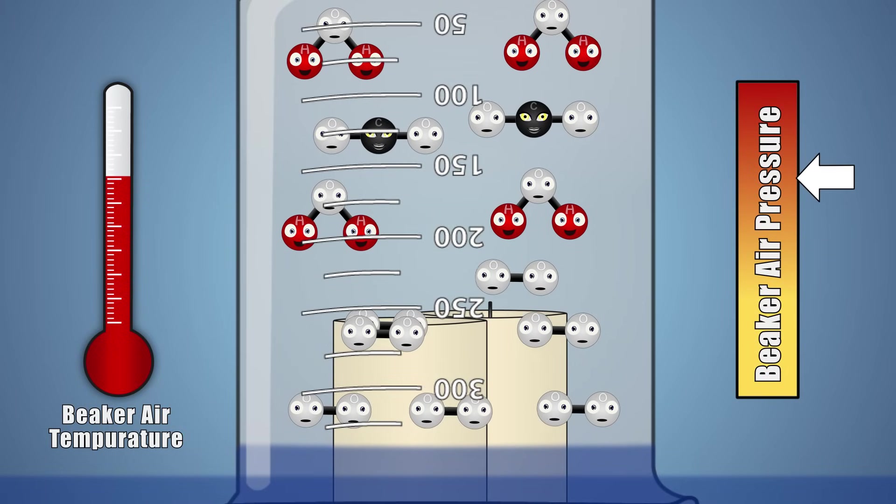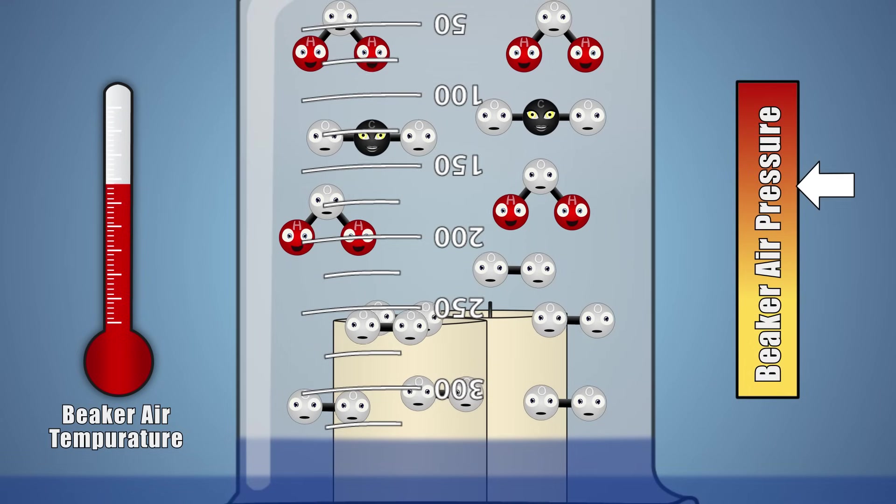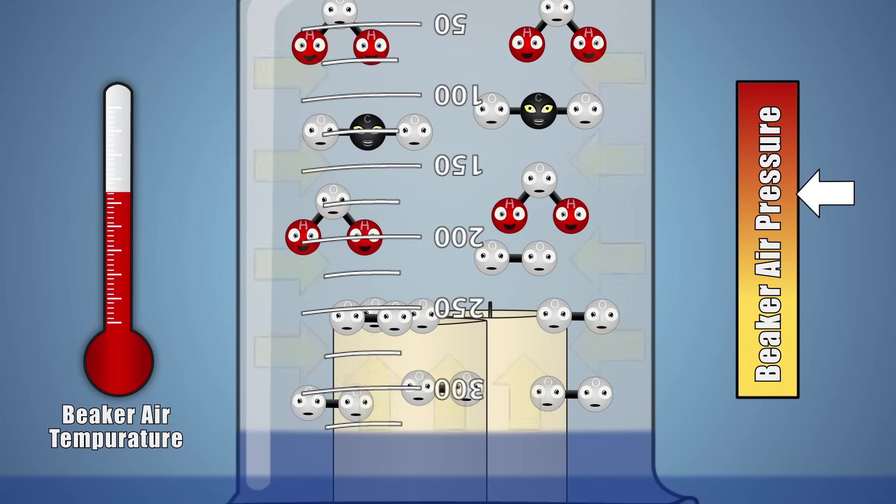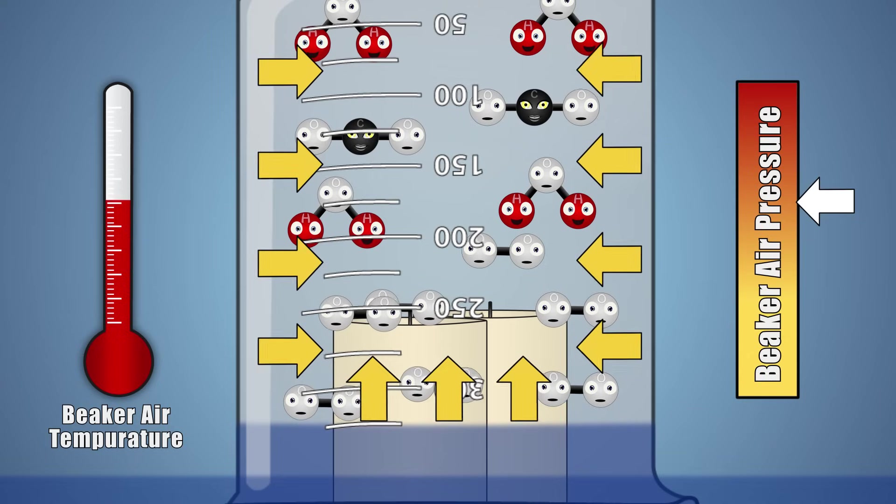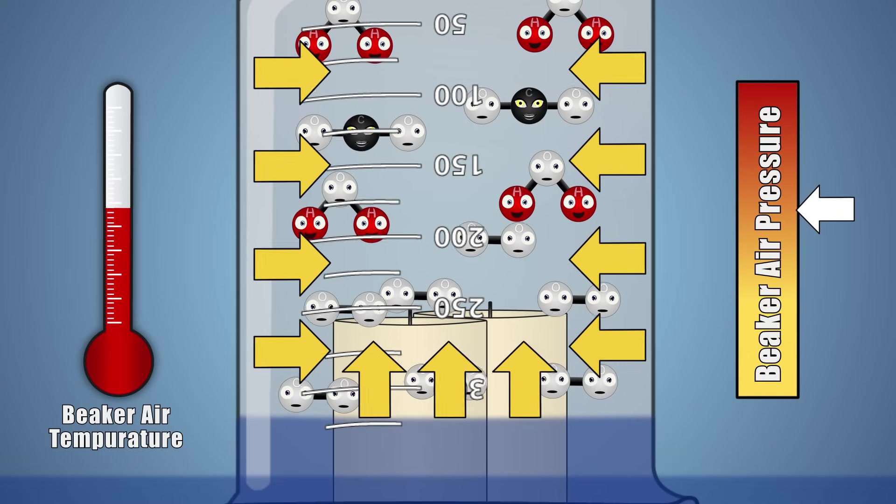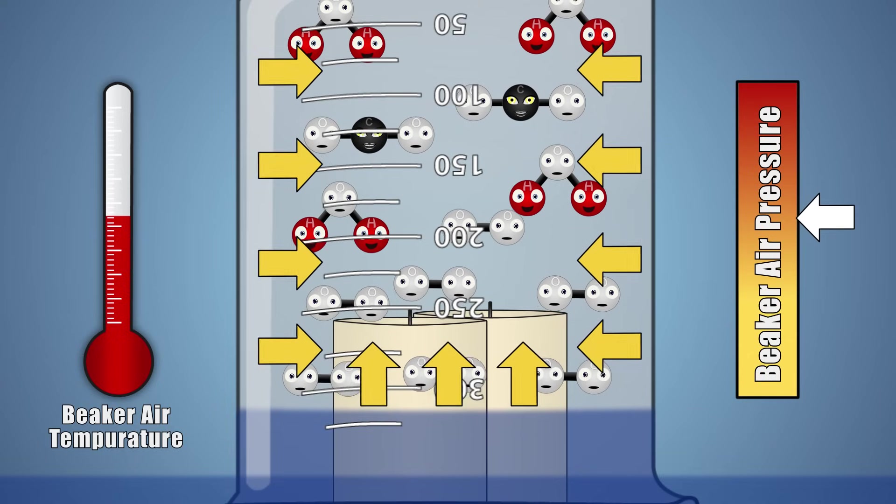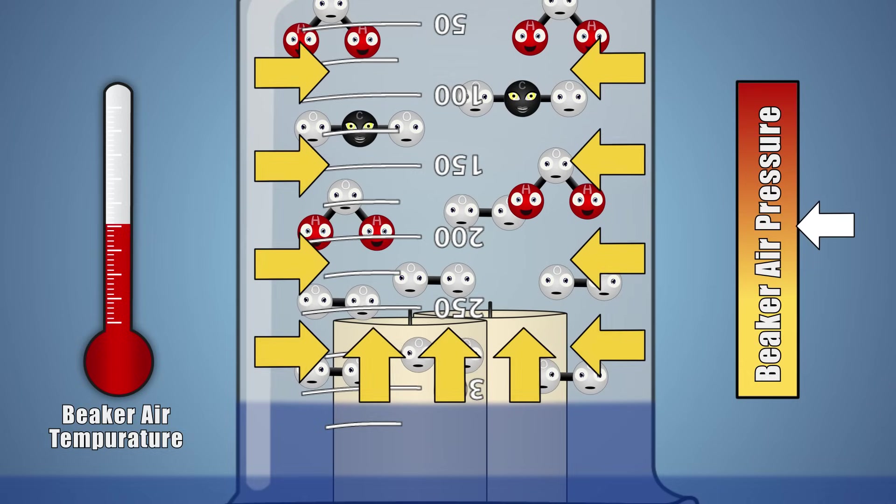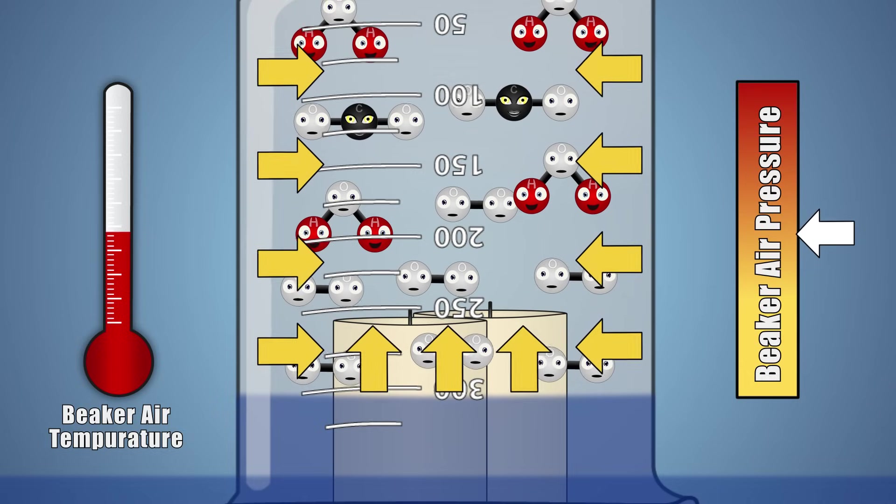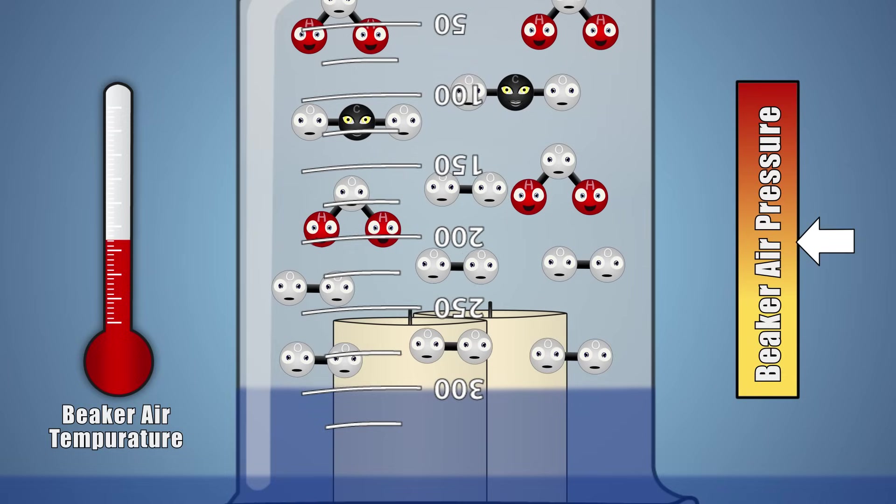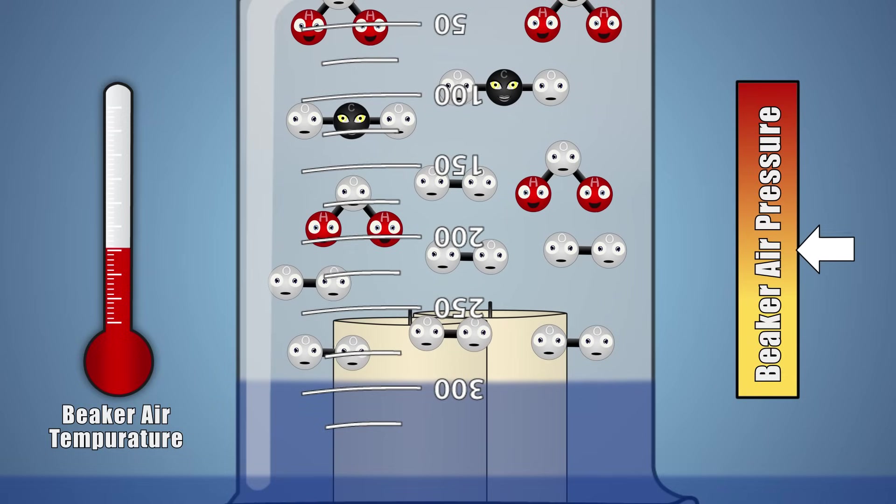As the pressure drops, the air under our beaker wants to be equal to the pressure outside of our beaker. This need for balance causes a pull on the sides of the beaker and the water at its base. Because it's much easier to pull water into our beaker than it is to collapse the sides of our beaker, the water in our shallow container is pulled into our beaker, raising the water level under the beaker, equalizing its pressure.